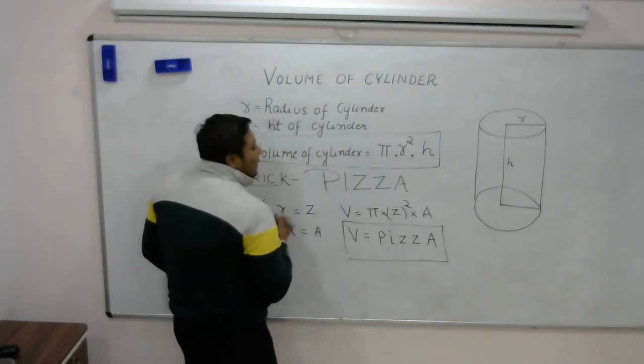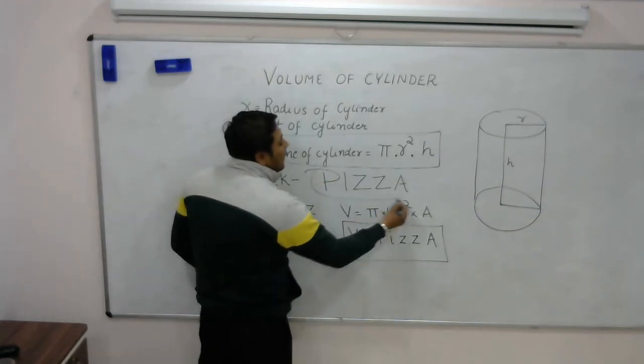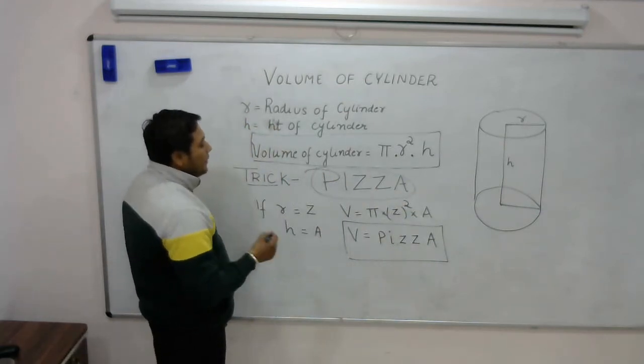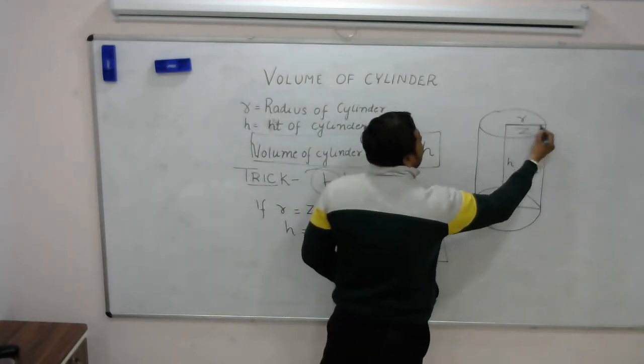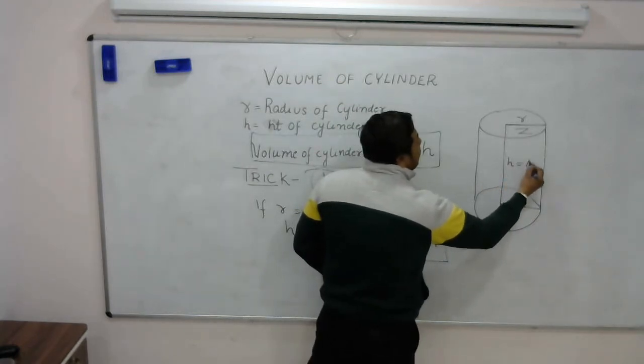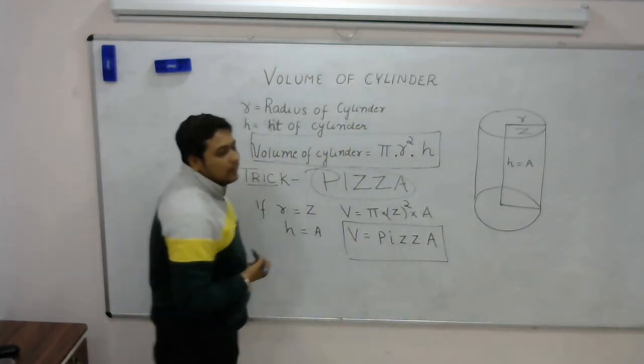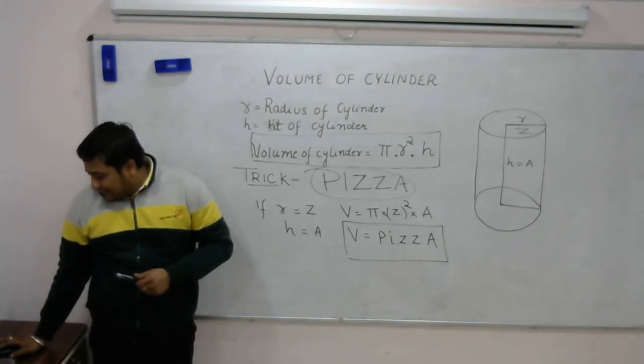So volume of cylinder can be memorized by the trick called Pizza, where Z represents the radius and A represents height of the cylinder.